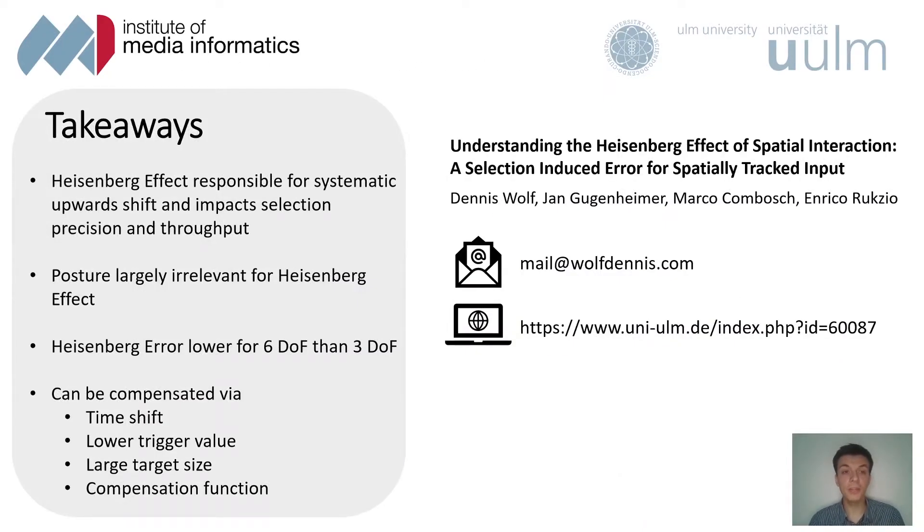To sum it all up, we have found that there is a systematic directional shift, in our case upwards shift with the Heisenberg effect. It does indeed impact selection precision and the performance. The posture of the arm and the body was largely irrelevant for the Heisenberg effect, but we did find that the degrees of freedom do impact the Heisenberg error, where 6 degrees of freedom led to a lower Heisenberg error. And that the Heisenberg effect can be compensated by different strategies, for example, a time shift using a lower trigger value, using larger target sizes, or just use a compensation function, which can happen in software.